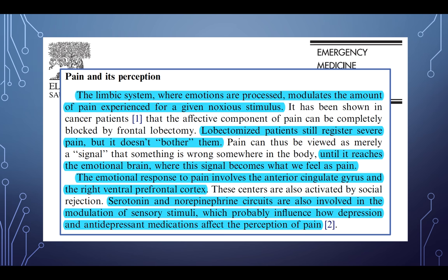The limbic system, where emotions are processed, modulates the amount of pain experienced for a given noxious stimulus. In cancer patients, the affective component of pain can be completely blocked by frontal lobectomy — lobectomized patients still register severe pain, it just doesn't bother them. Pain can be viewed as a signal from the periphery until it reaches the emotional brain. The emotional response to pain involves the anterior cingulate gyrus and the right ventral prefrontal cortex.